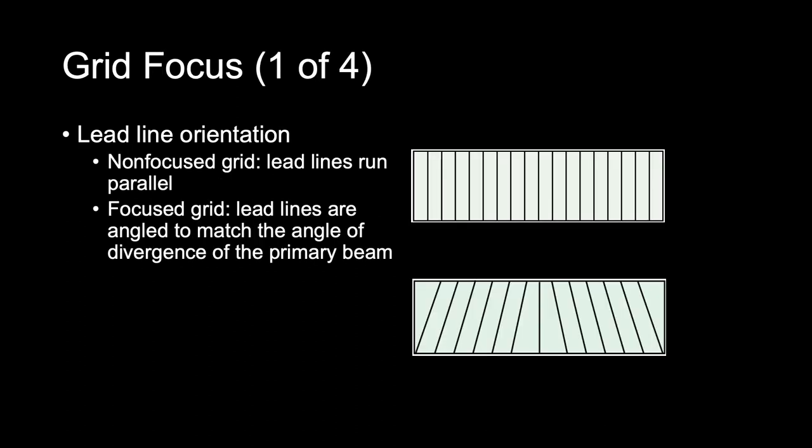Grid focus refers to the orientation of the lead lines to one another. There are two types of grid focus: parallel, or non-focused, and focused. A parallel or non-focus grid has lead lines that run parallel to one another, and parallel grids are used primarily in fluoroscopy and mobile imaging. A focused grid has lead lines that are angled or canted to approximately match the angle of divergence of the primary beam.